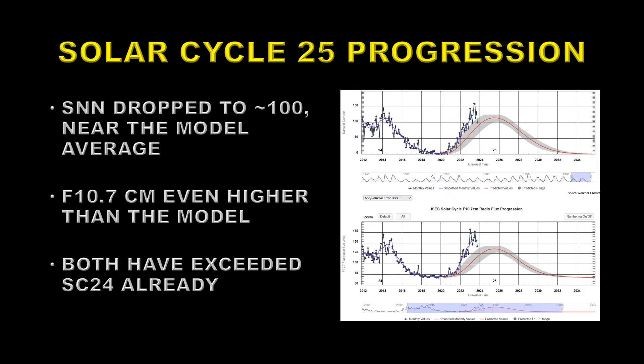Each month we take a look at how Solar Cycle 25 is progressing. The top plot here is the sunspot number, and you can see it's down, but it's still above where the prediction for the cycle was by quite a significant margin, although now it's within the margin of error. The F10.7 radio flux is still much higher than the model, but slightly down from last month. Note that both of these quantities have already exceeded Solar Cycle 24.